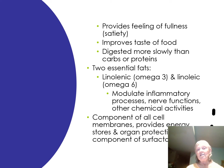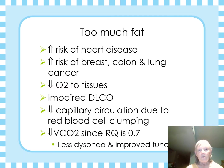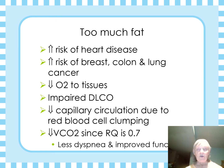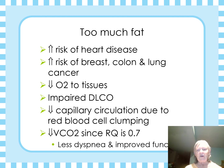Unfortunately, the typical diet is about 30 percent fat — that's way too much. Too much fat gives increased risk of heart disease, increased risk of breast, colon, and lung cancer, decreased oxygen to the tissues, and impairs your DLCO. You have decreased capillary circulation because of red blood cell clumping, but you do produce less CO2 because the RQ is 0.7, so you're not quite as dyspneic and you have a little bit better breathing. However, we don't see this on everybody, so you really need to figure out how to get the best ratio of carbs, proteins, and fats.